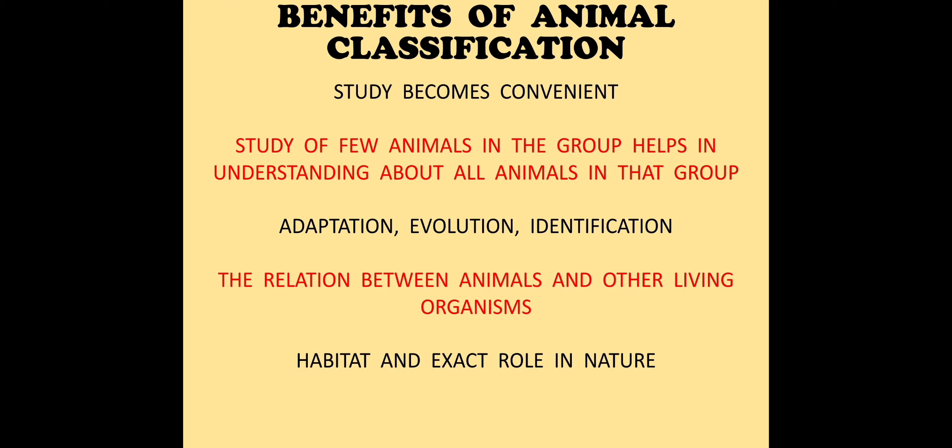Over generations as animals evolved they adapted themselves to the environment, and certain new features occurred in those animals. For example, human beings evolved from apes — as an ape, the tail was an important organ, but slowly after evolution humans stopped using their tail, so it degenerated and we are left with only a tail bone, which has become a vestigial organ. Classification helps scientists study what adaptations animals went through during evolution.